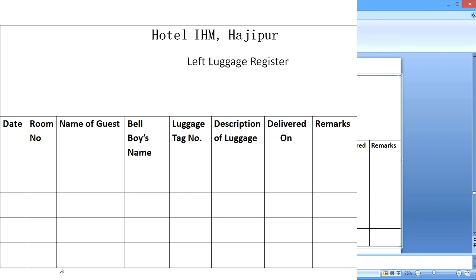Please follow my cursor. The first column is date — this is the date on which the luggage has been deposited with the front office, specifically a bell desk. A left luggage, I think, would be handled by the bell desk. Then room number is of course the room number of the guest who is giving the luggage.